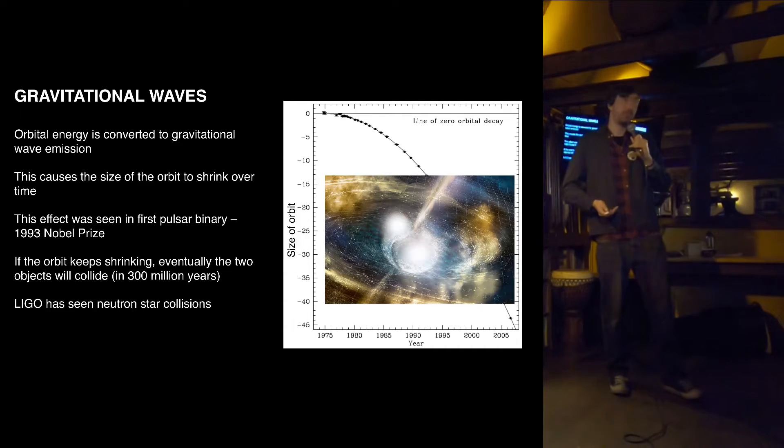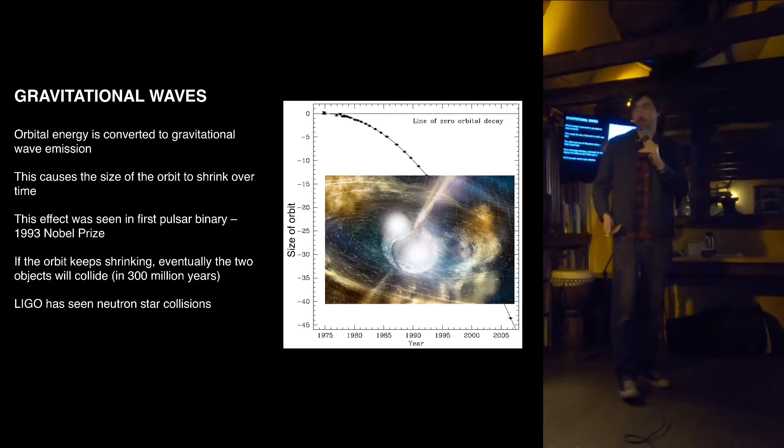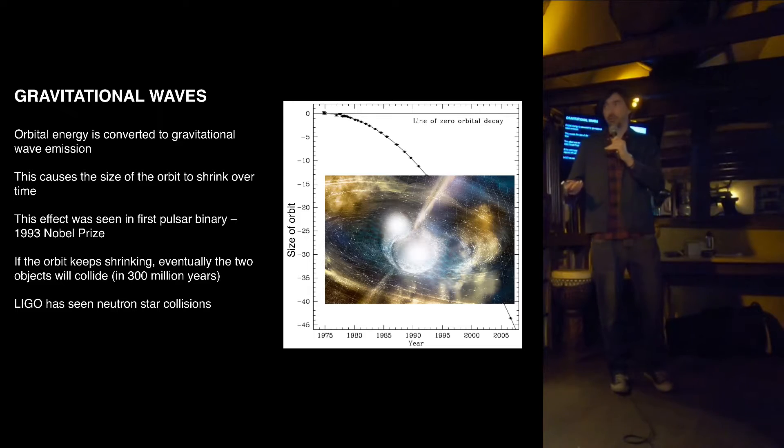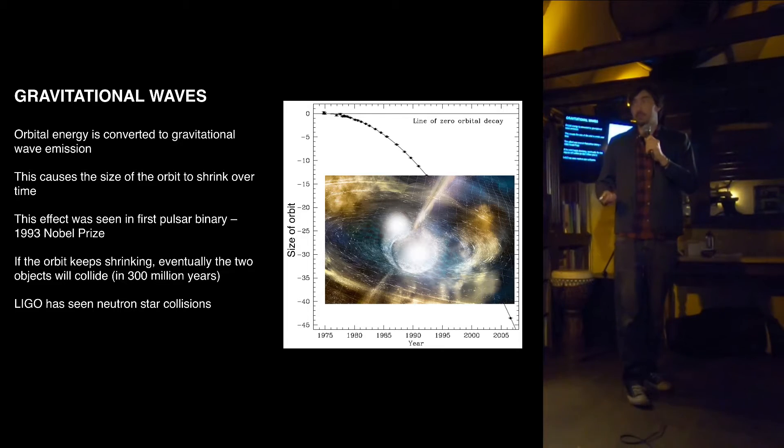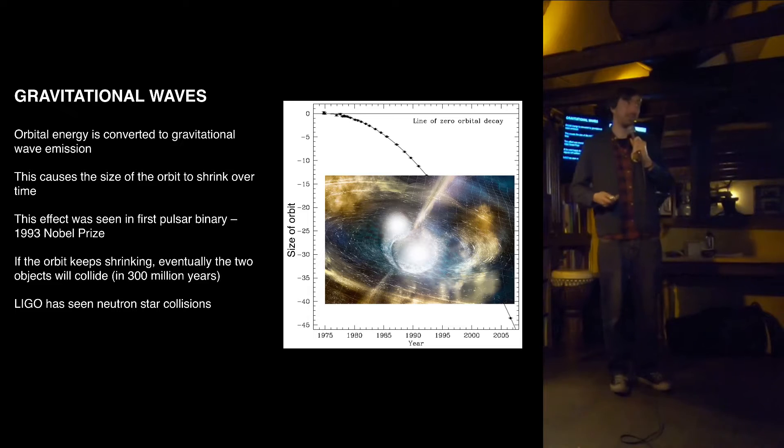And of course, if the orbit keeps on shrinking, eventually these things are going to collide. And in the last one or two years, we've actually started to see evidence for that with LIGO, where they have detected gravitational waves from merging neutron stars. And in fact, over the last couple of months, they've been detecting many such events. So another really, really dramatic confirmation of this kind of model.